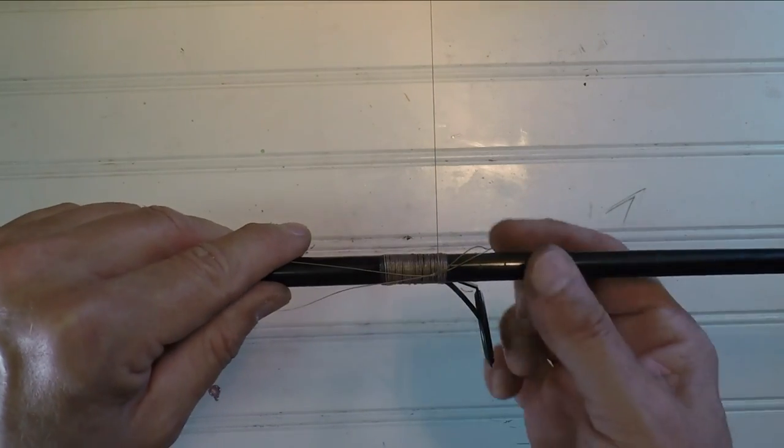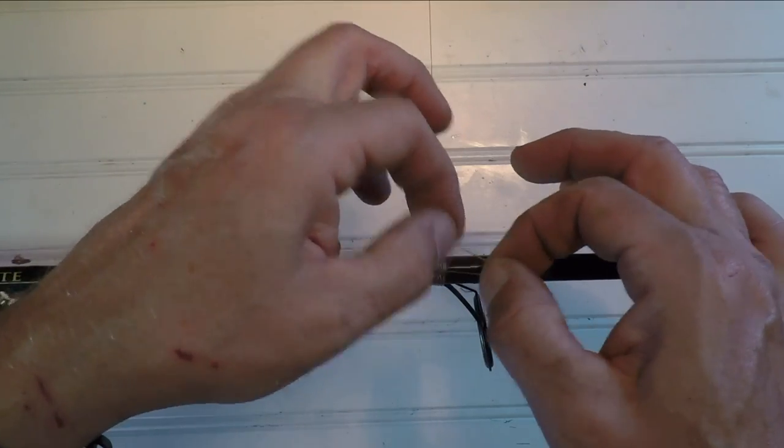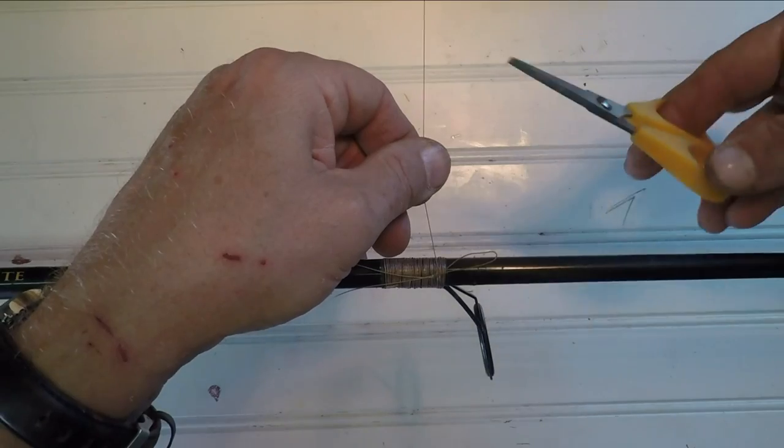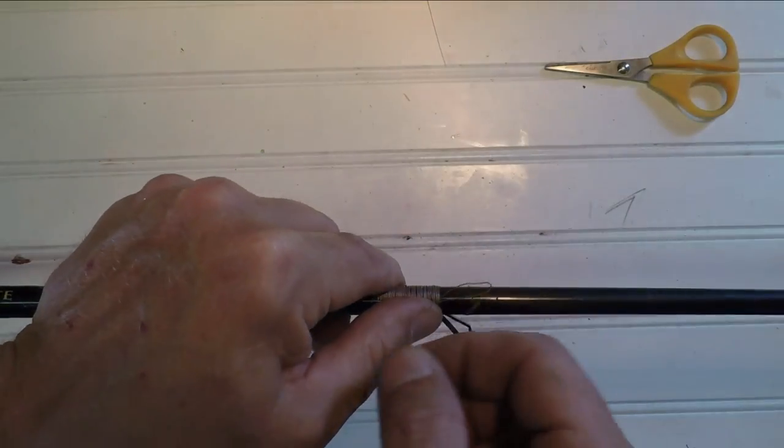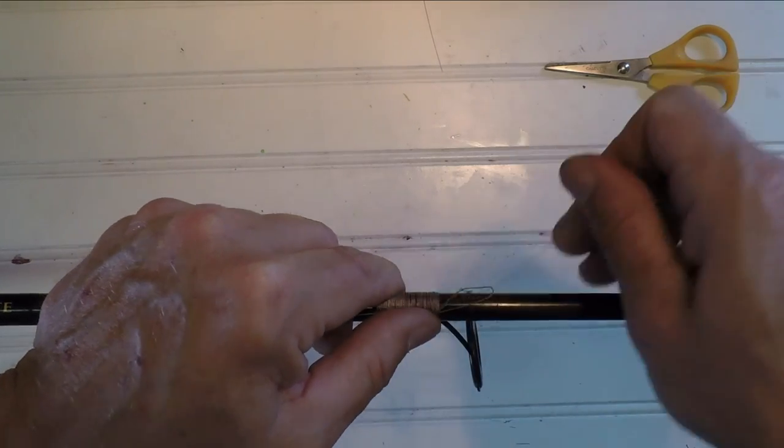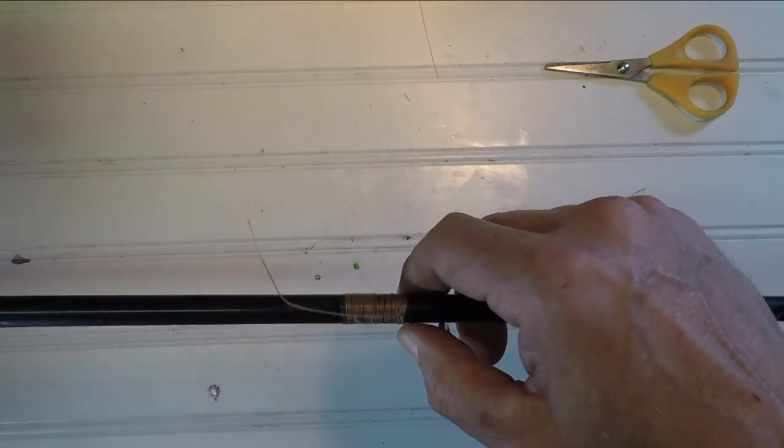Okay, there'll be epoxy on there that'll square that away. So I fluff out the loop and keep tension on. Cut the line and run it through the loop and grab the loop and pull it back through.